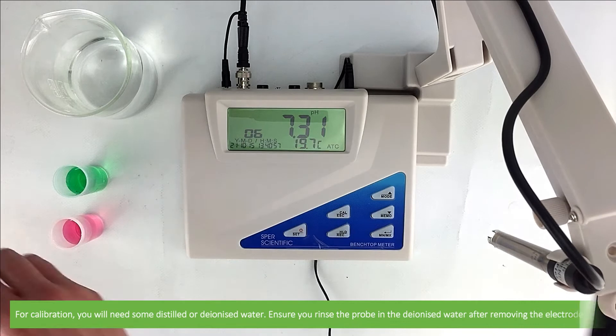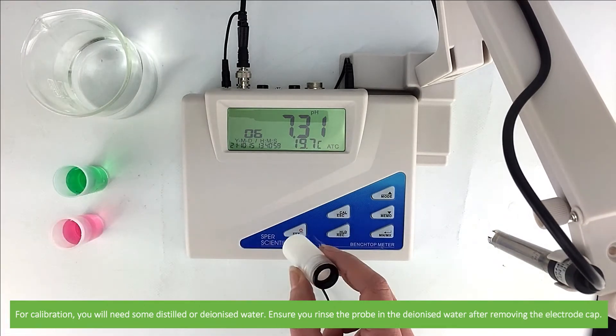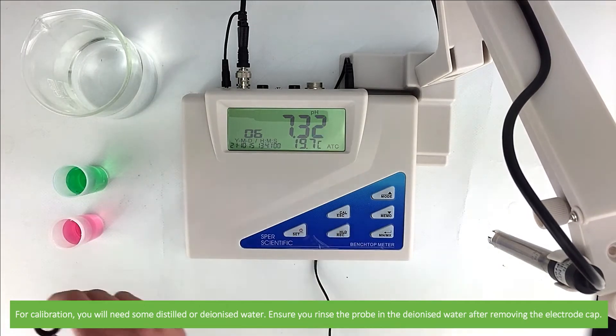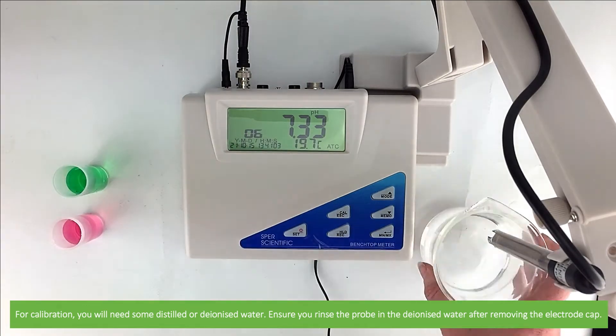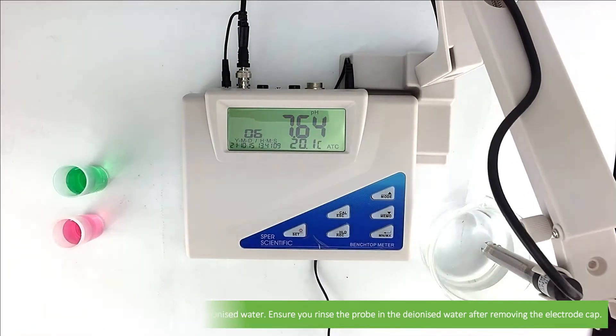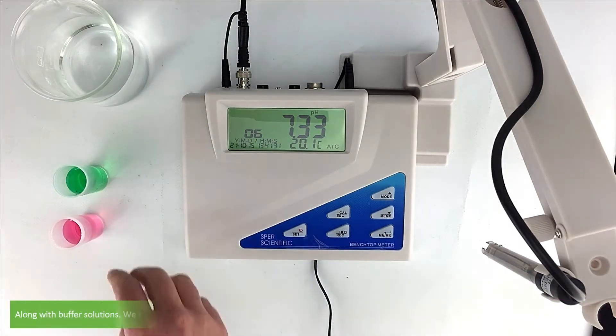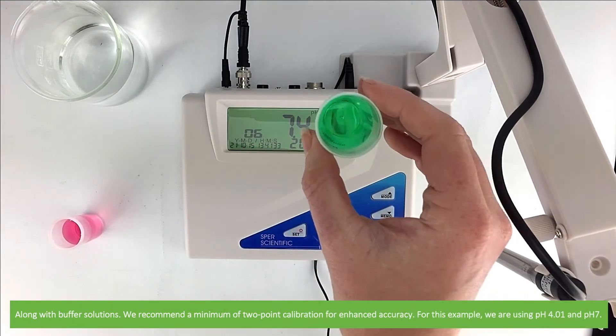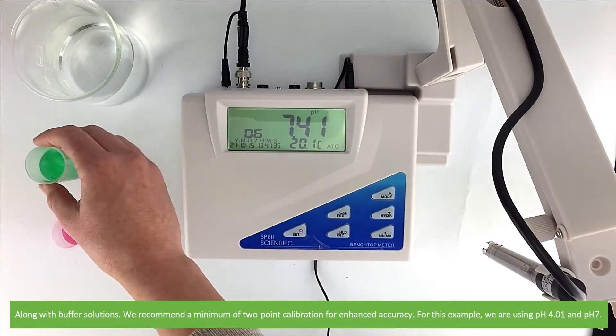For calibration, you'll need some distilled or deionized water. Ensure you rinse the probe in the deionized water after removing the electrode cap, along with buffer solutions. We recommend a minimum of two-point calibration for enhanced accuracy.